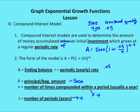Doing the calculations, you should get an ending balance of approximately $6,099.45. So after four years compounded quarterly at 5% annual interest, you've made about $1,100 on that $5,000 investment.